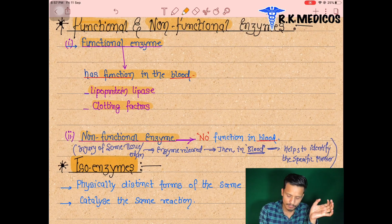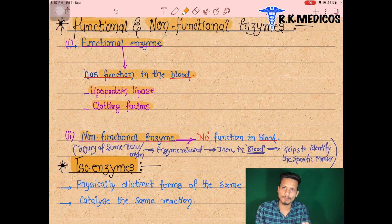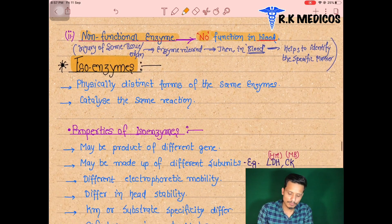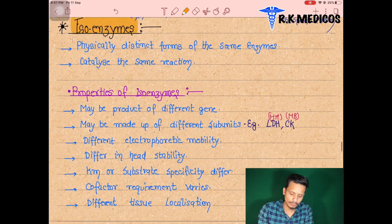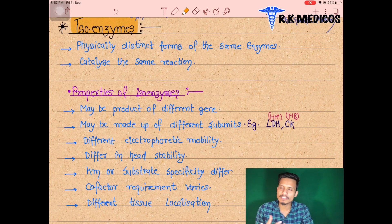Non-functional enzymes have no function in the blood — that is why they are called non-functional enzymes. These are the types of enzymes classified on the basis of whether they have a place of action in the blood or not.